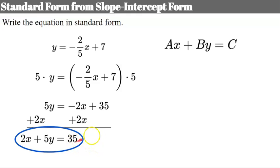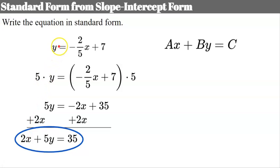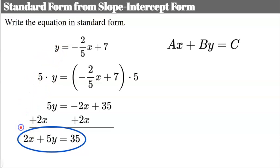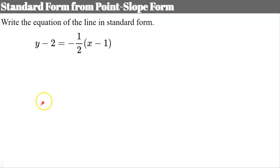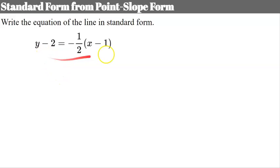This equation is equivalent to the given equation — it's the same line, just written in slope-intercept form and now in standard form. In a previous video lesson we also learned about point-slope form, and now we're being asked to take that equation and write it in standard form.